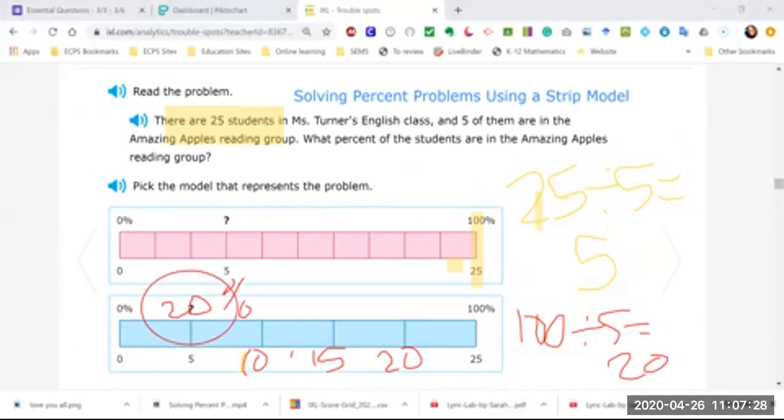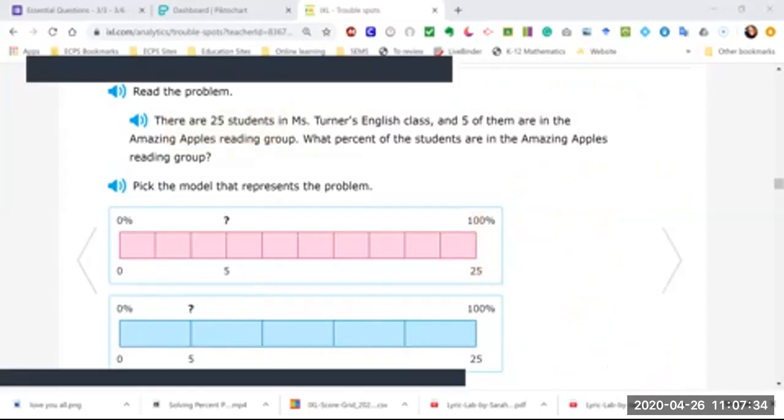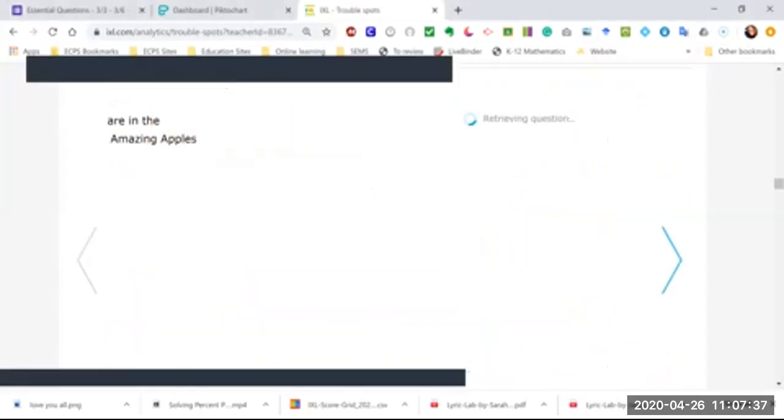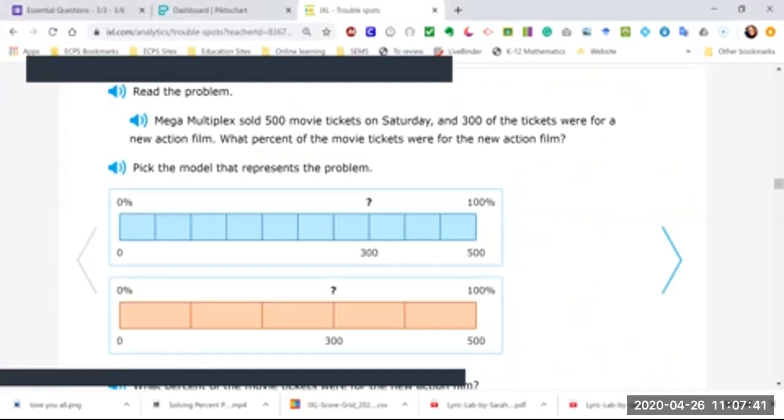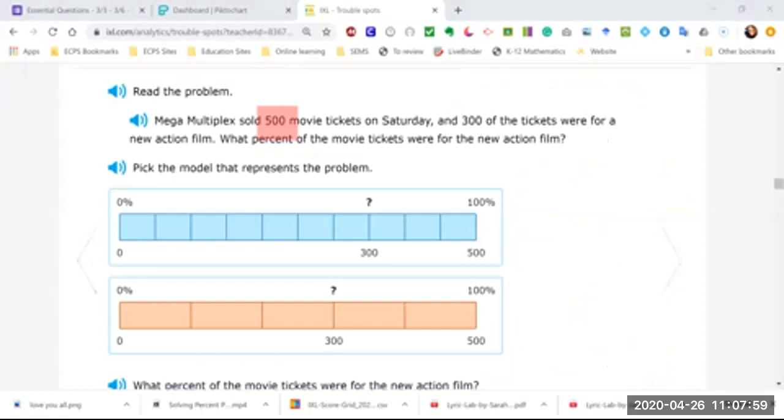Okay, and we'll look at the next problem. So in this problem it says Mega Multiplex sold 500 movie tickets on Saturday and 300 of the tickets were for a new action film. The question it is asking is what percent of movie tickets were from the new action film.